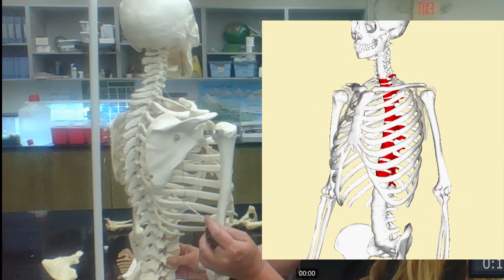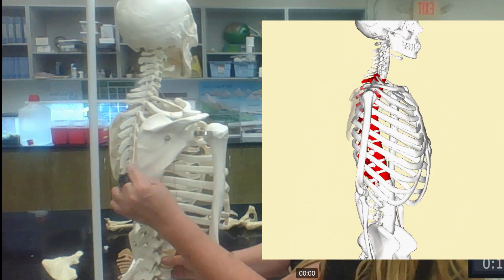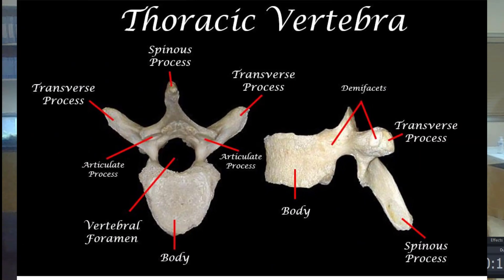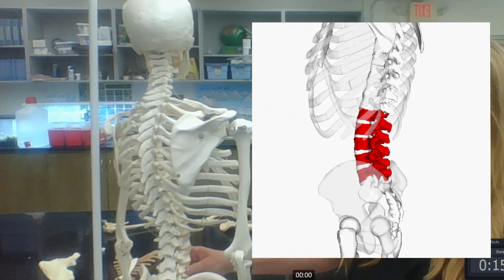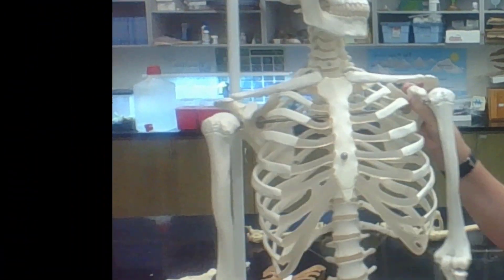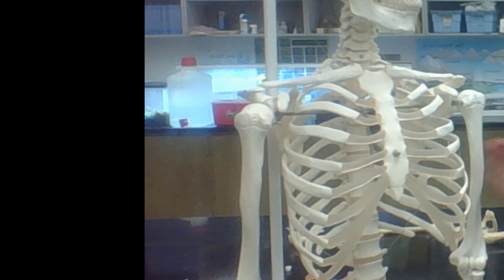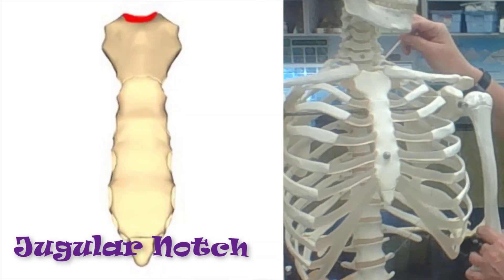The thoracic vertebrae articulate with the ribs and also have rather pronounced downward-facing spinous processes. After the thoracic region, we get into the lumbar region.